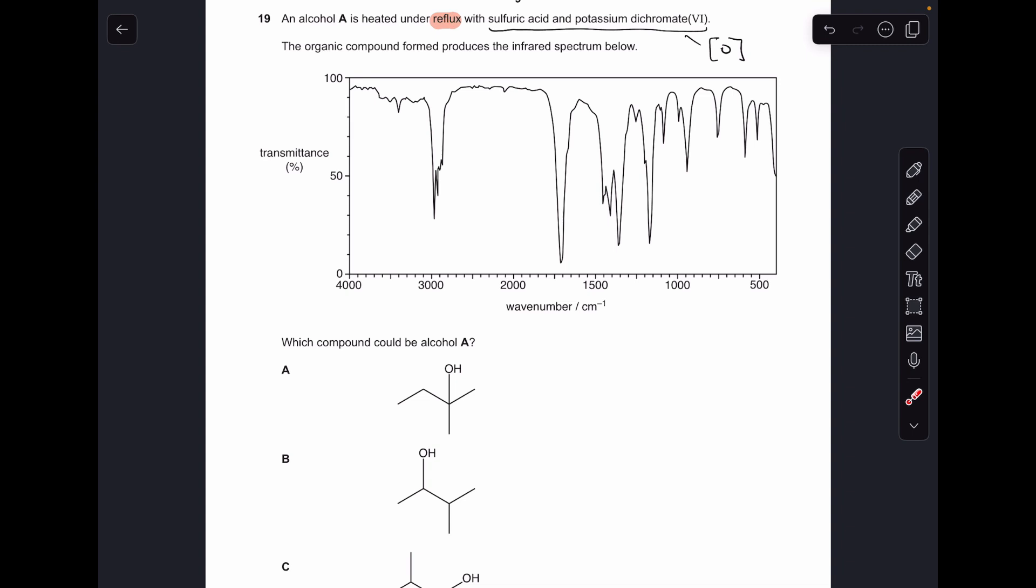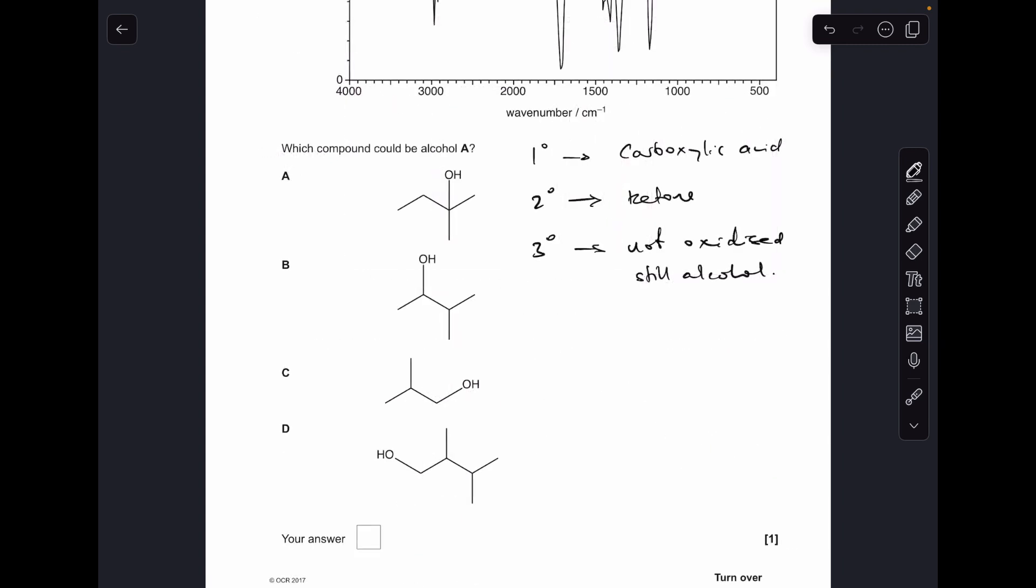Number 19, I've highlighted the word reflux, because that's important. So when you heat an alcohol with a mixture of sulfuric acid and potassium dichromate-6, that's an oxidizing agent, so you're oxidizing the alcohol. So this question is testing our knowledge and understanding of the oxidation of alcohols under reflux. So there's just a reminder of what's possible. So a primary alcohol will be oxidized under reflux to a carboxylic acid. Secondary is going to be oxidized to a ketone. And a tertiary alcohol can't be oxidized, so you'll still have an alcohol at the end.